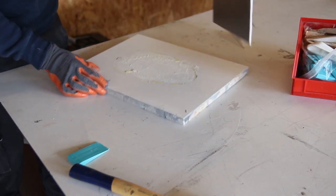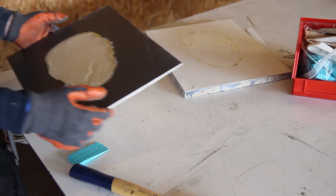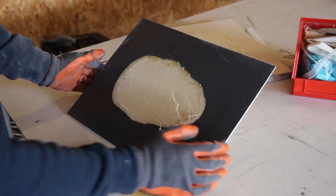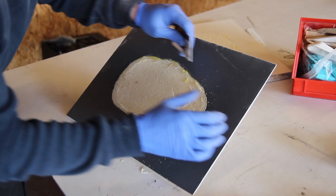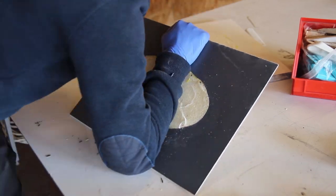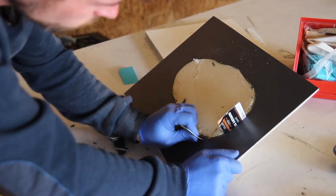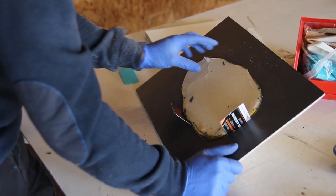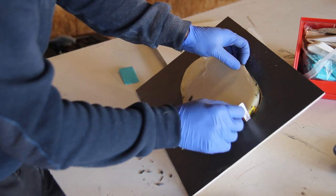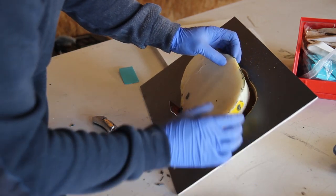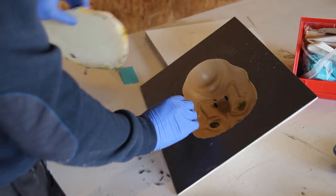And you can see the release agent is working quite well, so the entire piece came off of the melamine boards. And now it's time just to find a way to remove the plug, so the master that we used. And you can see that some gel coat will seep under it, but it's not a big problem because you can just cut it off or remove it a bit.